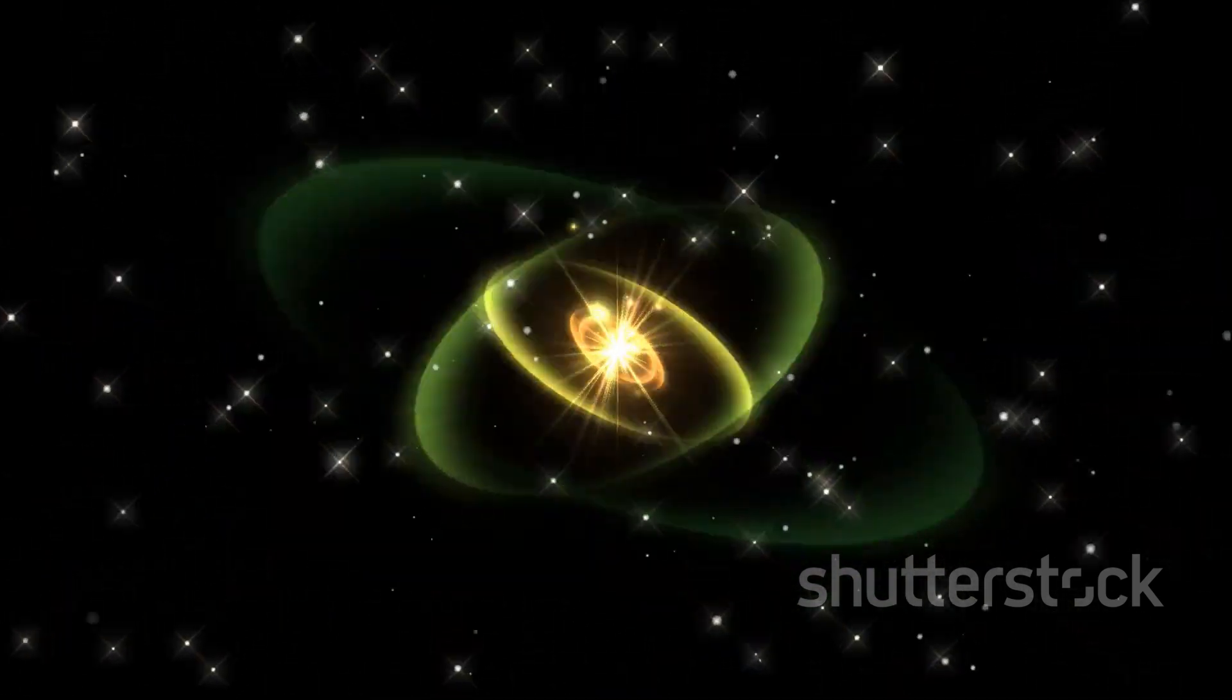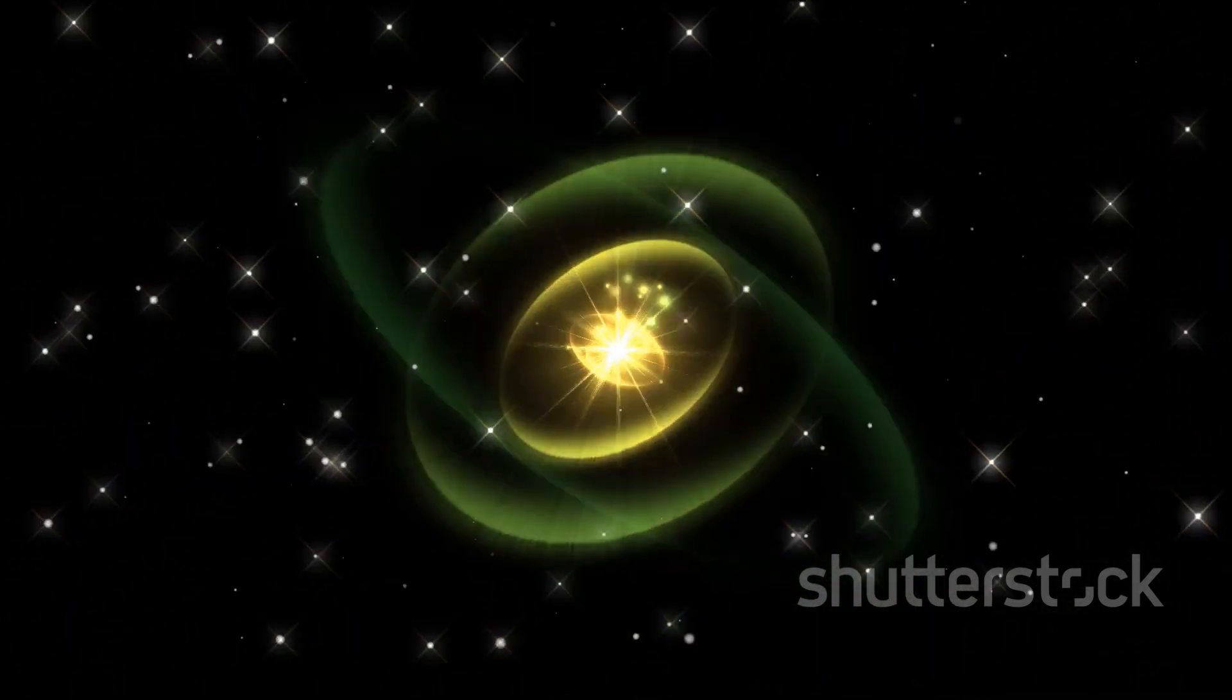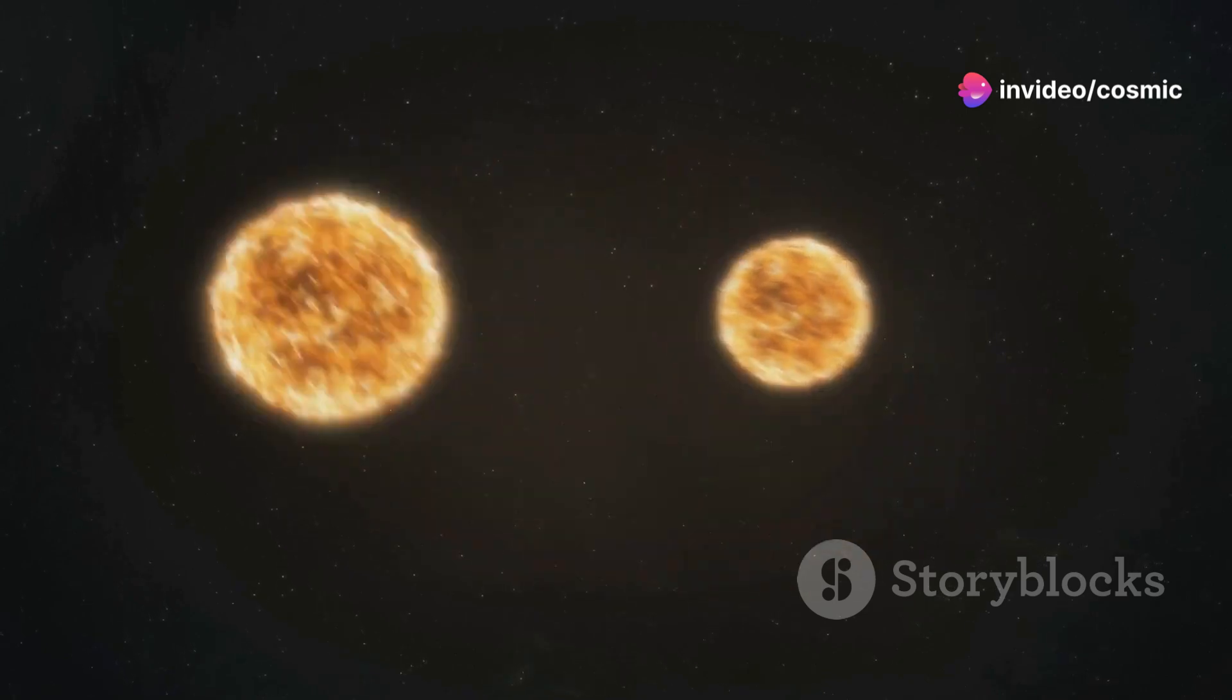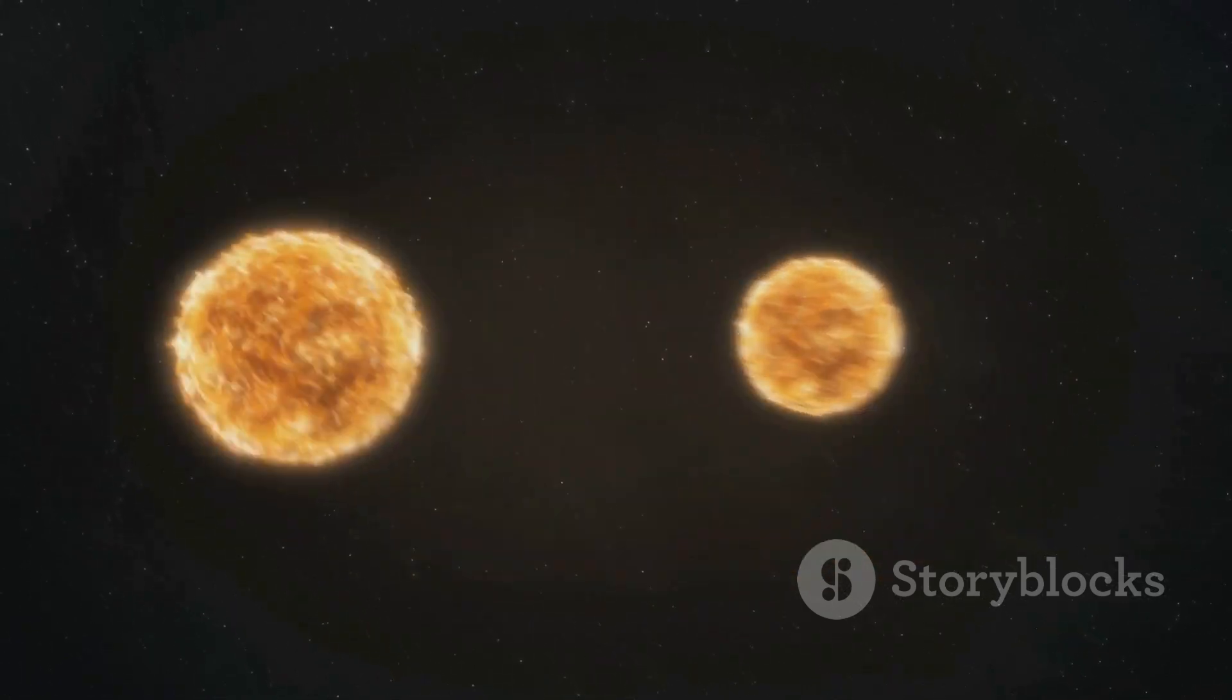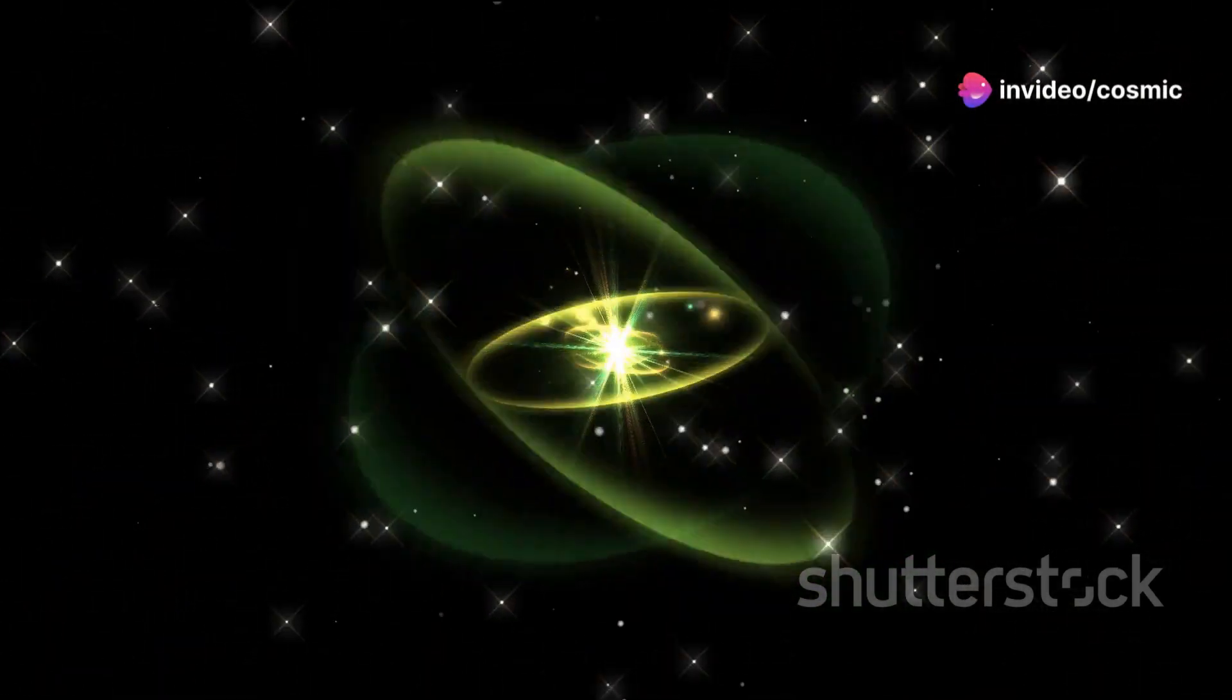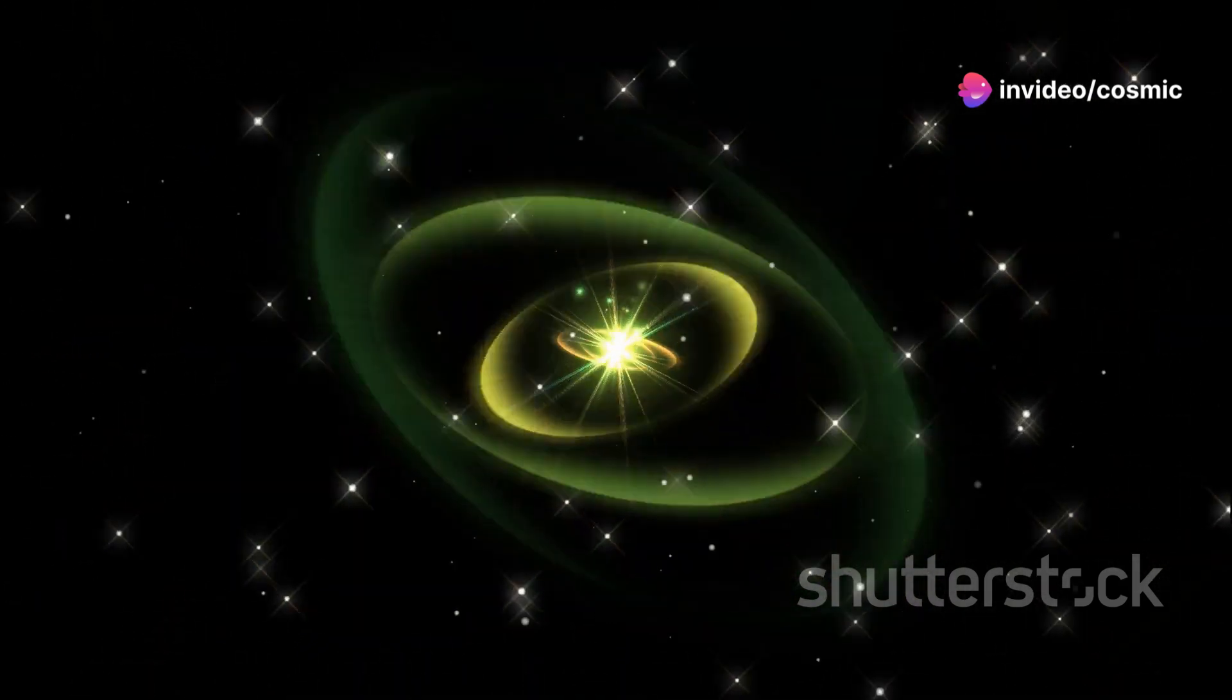PSR J1748-2446AD is a specific type of pulsar, located about 18,000 light-years away from Earth, in the constellation Sagittarius. This makes it a distant yet intriguing part of our galaxy. This pulsar is part of a binary system, meaning it orbits a companion star. This relationship adds another layer of complexity to its behavior and characteristics. The companion star plays a crucial role in the pulsar's incredible speed, influencing its rotation and the emission of radiation. This interaction is key to understanding the pulsar's unique properties.